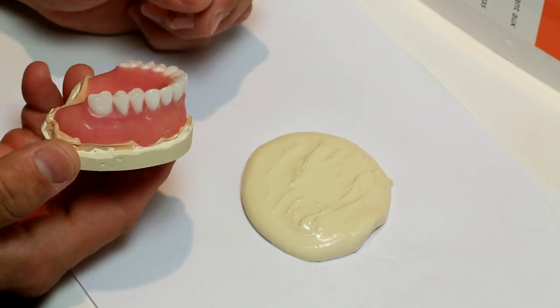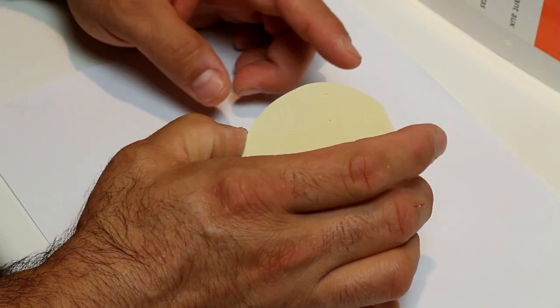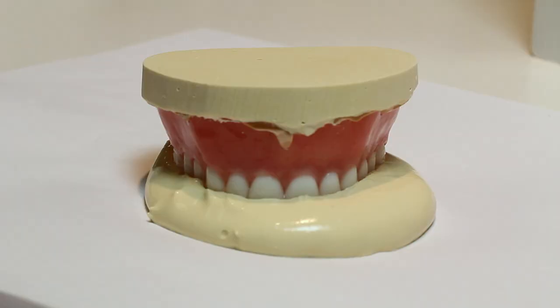Place the denture and model teeth down onto the stone patty, creating an index of the teeth. Let it set.